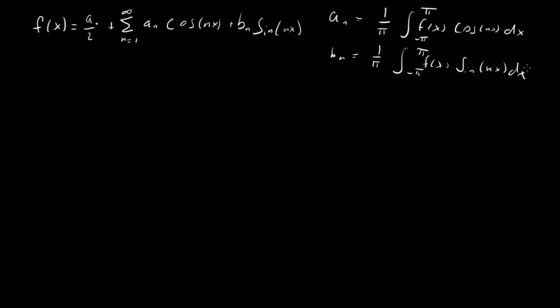Now what I want to do is look at rewriting this whole thing in terms of complex exponentials and see what we get. Recall that Euler's formula — the chief way of relating sines, cosines, and complex exponentials — is e to the ix equals cosine x plus i sine x.